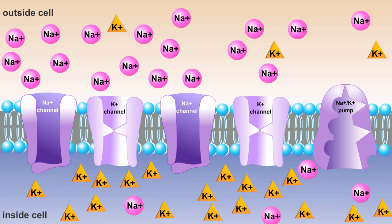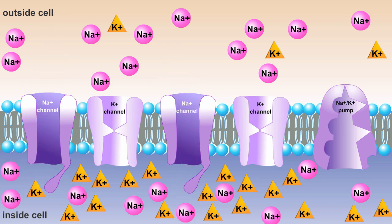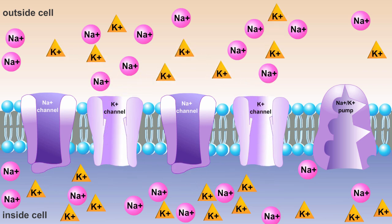As you are sitting watching this video, the cells of your nervous system are sending signals to your brain. To do this, they need to be able to move ions efficiently back and forth across the plasma membrane of the cell. In this animation, we are going to explore the two mechanisms by which this happens.